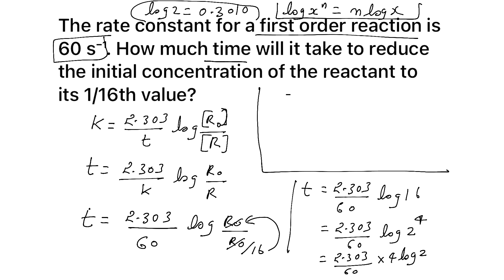On calculating, you will get 2.303 by 60, you will get 0.038 into 4 into log 2 is 0.3010. On multiplying this, you will be getting 4.62 × 10⁻² and that is our second. That is our final answer.